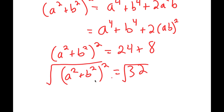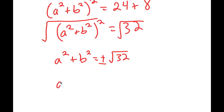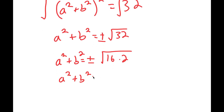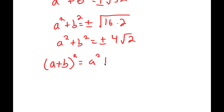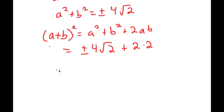Taking the square root on both sides gives a squared plus b squared equals positive or negative square root of 32, which simplifies to positive or negative 4 root 2. Now using the identity (a plus b) squared equals a squared plus b squared plus 2ab, this becomes positive or negative 4 root 2 plus 2 times 2, giving (a plus b) squared equals 4 plus or minus 4 root 2.